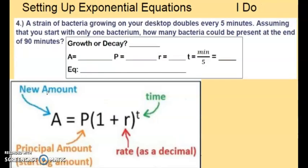Let's look at the next part. Setting up exponential equations. A strain of bacteria growing on your desktop doubles every 5 minutes. Assuming that you start with only one bacterium, how many bacteria could be present at the end of 90 minutes? When setting this up, we want to follow our BHS method.